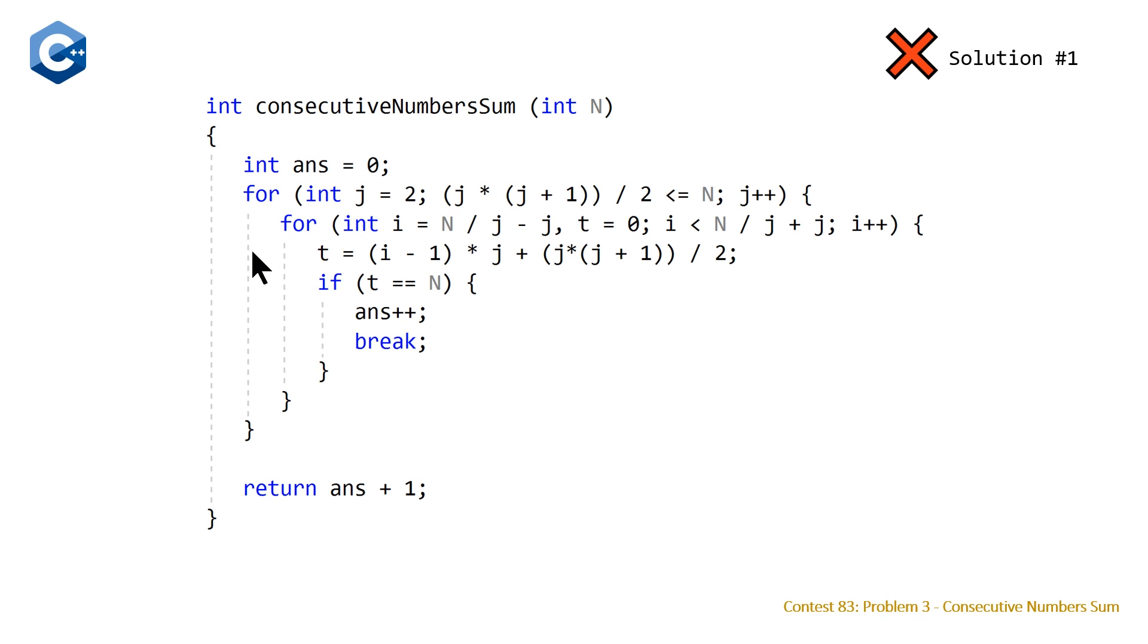Our second loop is basically trying to find the I that satisfies our formula where we want T equal to N. So T here is just using our formula: (I-1) times J plus J times (J+1) divided by 2. We need to find a range that's pretty small such that we are checking possible values for I. We know there's only going to be one possible value for I with each given J that will satisfy this formula and have T equal to N.